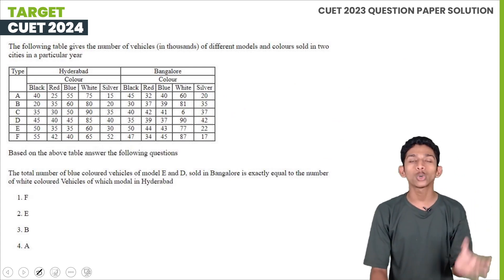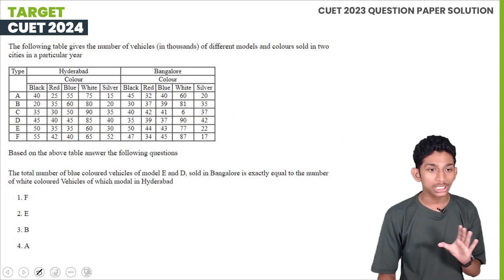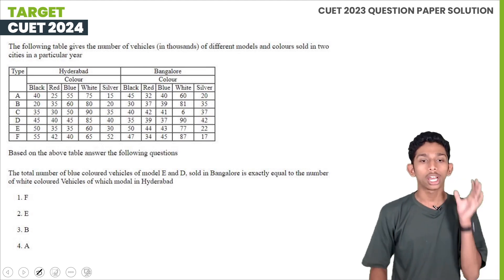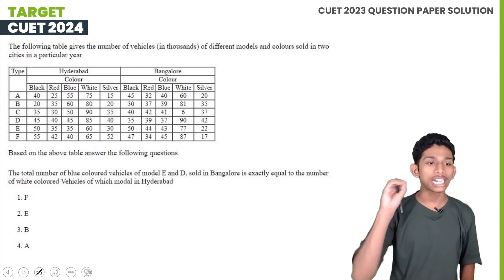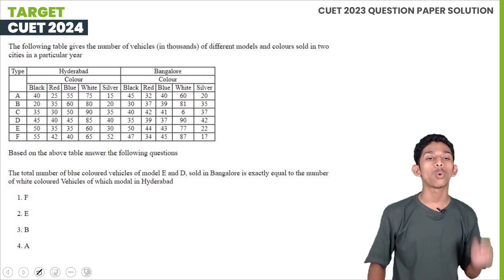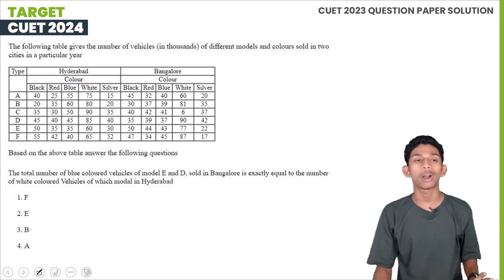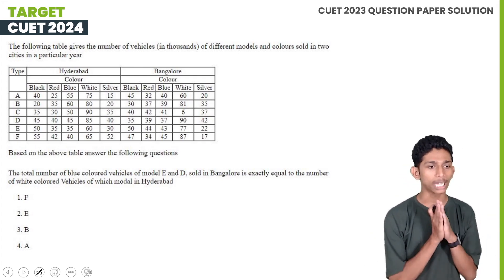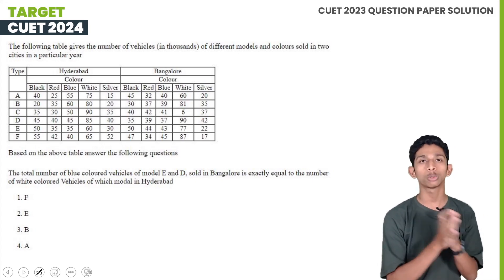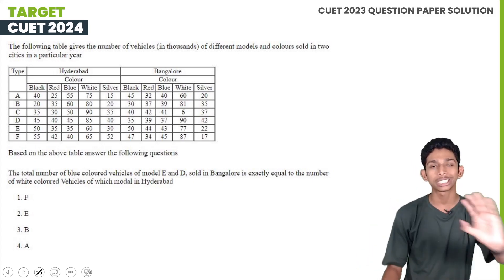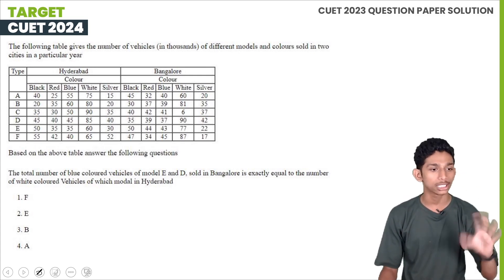Now the following table gives the number of vehicles — in thousands — of different models and colors sold in two cities in a particular year. The two cities are Hyderabad and Bangalore. Based on the above table, answer the following questions.